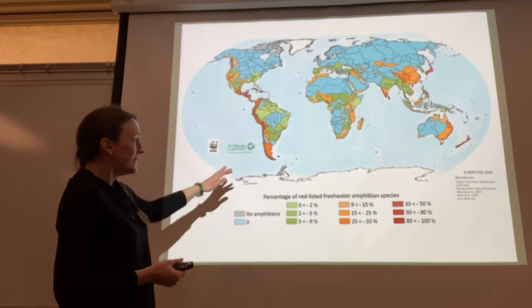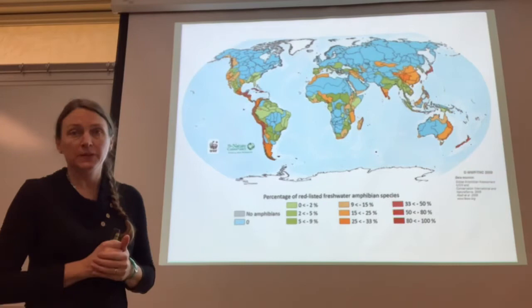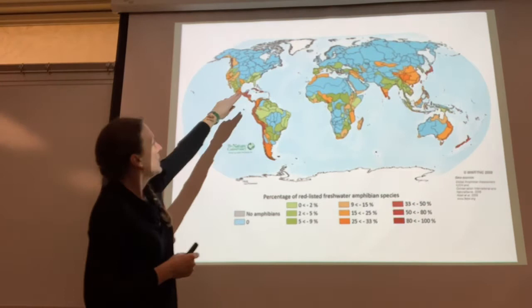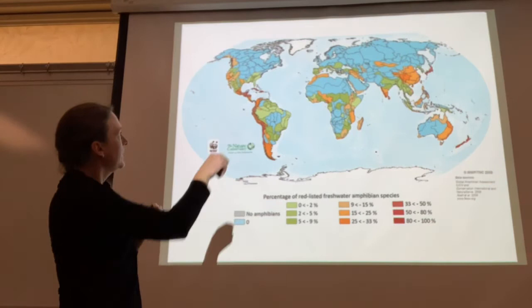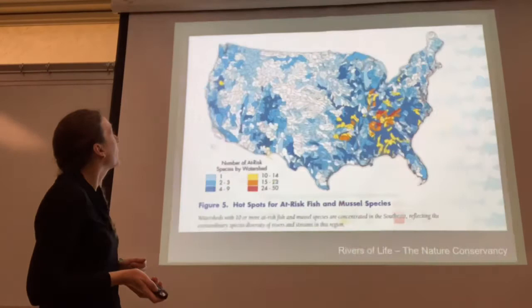Here we can see the percentage of red-listed freshwater amphibian species. The red list is a more global effort to track endangered species — the Endangered Species Act just works within the United States. We can see really high rates of red-listed species for amphibians in particular parts, especially Japan and New Zealand, many island nations, and the Caribbean. We see these hot spots where amphibians are really in trouble.